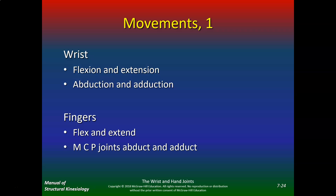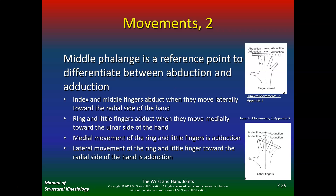Movements include wrist flexion and extension, abduction and adduction, and finger flexion and extension. MCP joints abduct and adduct. The middle phalanx is the reference point to differentiate abduction from adduction. The index and middle fingers abduct when they move laterally toward the radial side; the ring and little fingers adduct when they move medially toward the ulnar side.